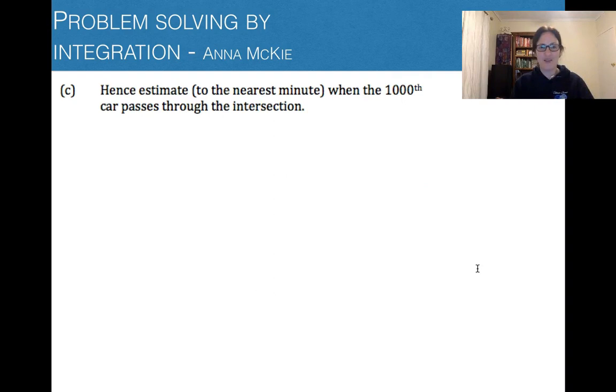Hence, estimate to the nearest minute when the 1,000th car passes through the intersection. So you might have a sense of reasonableness. So 1,000th car. Think back to part A. How many cars after three hours? It was 5,600 cars. That was after three hours. So the answer that we want here needs to be less than three to be reasonable. So that's just a good way of checking in your head.